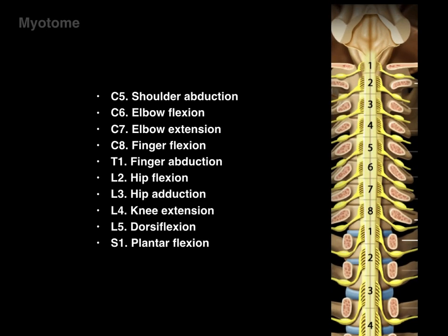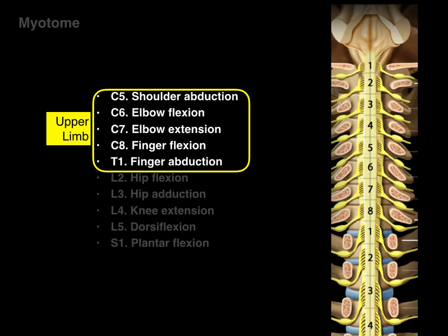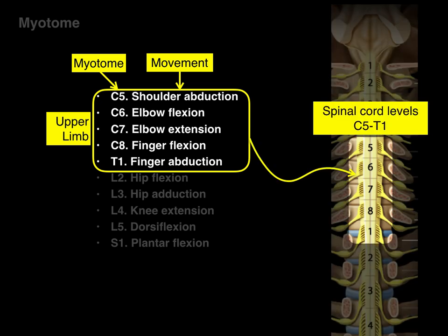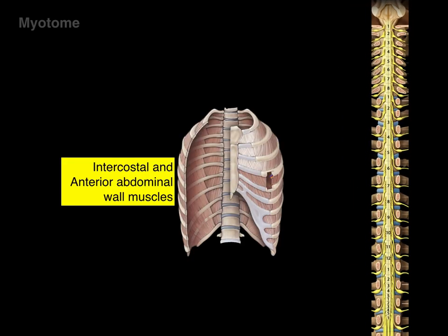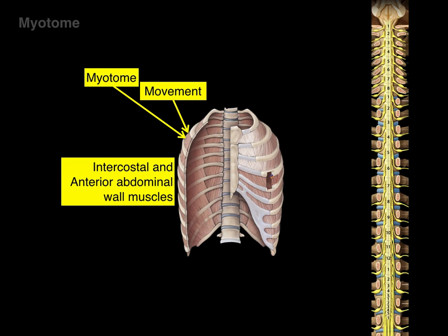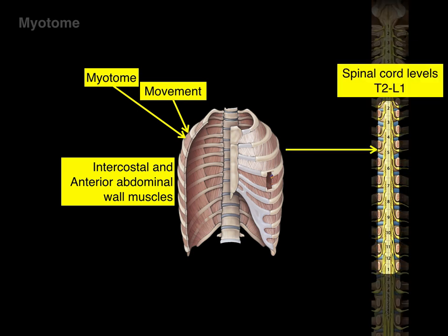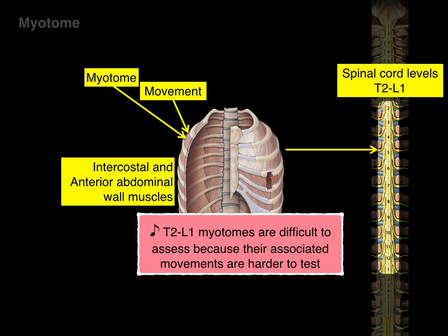There is a list of specific clinically relevant myotome levels. In the upper limb, those five myotomes each have a specific associated movement, and each of those movements is associated with a spinal cord level. For the intercostal and abdominal wall muscles, each myotome has an associated movement and associated spinal cord level. A little note: T2 to L1 myotomes are more difficult to assess because their associated movements — think intercostal muscle movements — are harder to test compared to bending the elbow or moving your fingers.